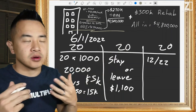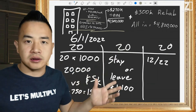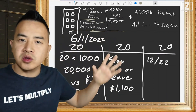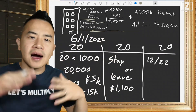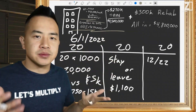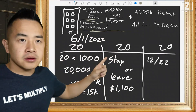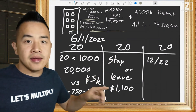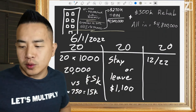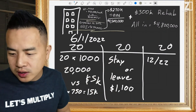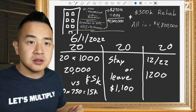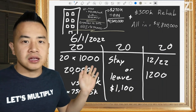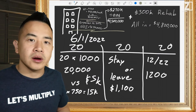We're going to spend $300,000 rehabbing all 60 units, so we're all-in at $4.8 million — obviously not counting closing costs and other items, but I just want you to understand the high-level concepts. For the third group of 20, the same thing: stay or leave at $1,200. I'll show you what it all looks like on the next slide.